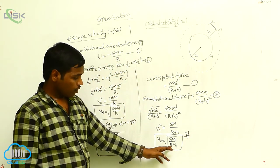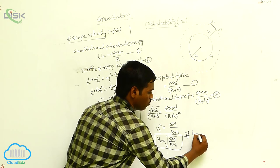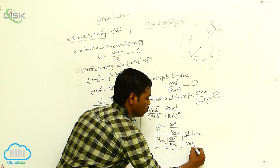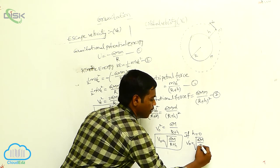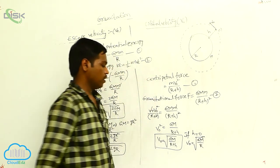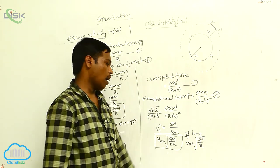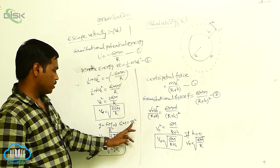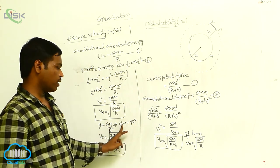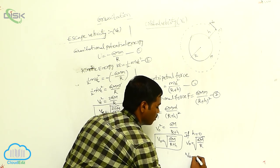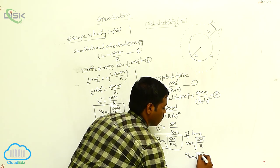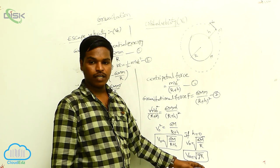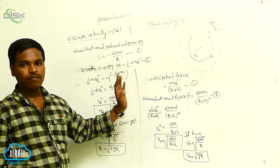For the special case where h equals 0, V₀ equals the square root of GM by R. Since g·R² equals GM, we can also write V₀ equals the square root of g·R. This is the orbital velocity at the Earth's surface.